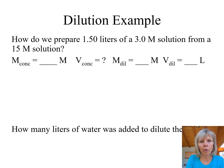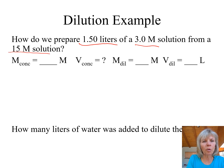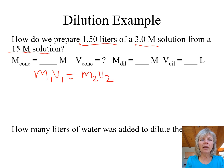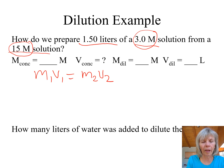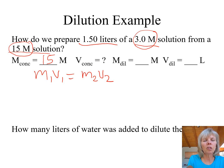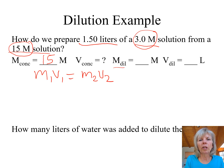In the next example, we want to prepare 1.5 liters of a 3 molar solution from a 15 molar solution. This is a dilution problem, so we use M1V1 = M2V2. The concentrated solution has the larger number, which is 15 molar. The 3 molar means we added water to the 15 molar to dilute it. So: molarity of concentrated = 15 molar, molarity of dilute = 3 molar, and the volume of the dilute solution = 1.50 liters.